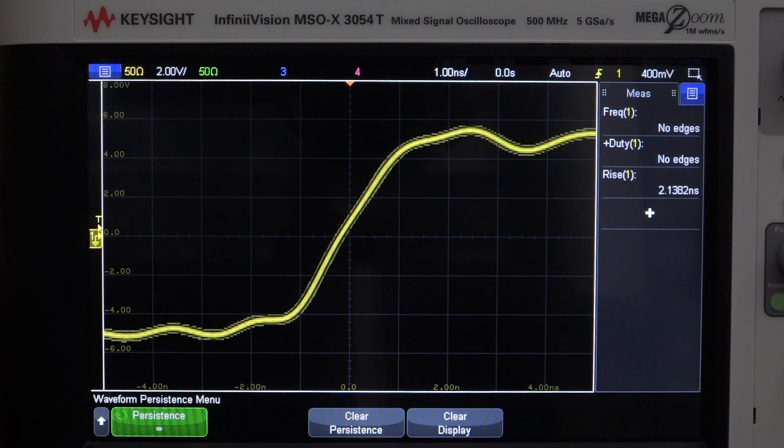I already showed you frequency stability on the spectrum analyzer, but in case you're curious, here's an infinite persistence scope view at 1 million waveforms per second. I don't see any jitter issues, but again you'd need scope bandwidth way higher than 1GHz to really capture the limitations of the unit.